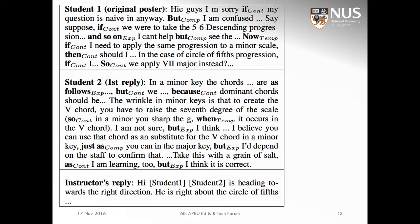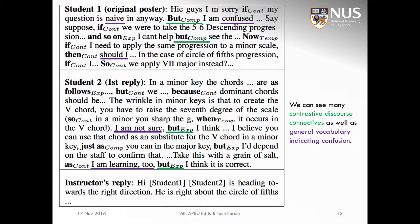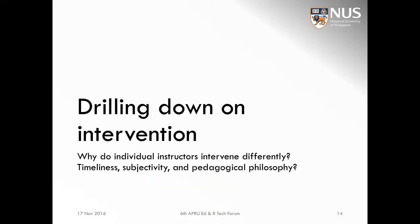Looking at an example, we can see many discourse connectives underlined in green — all instances of 'but' — which exemplifies a contrastive discourse connective. We also see words underlined in purple indicating some type of confusion. These types of discourse cues and vocabulary let us identify that a post requires instructor intervention.